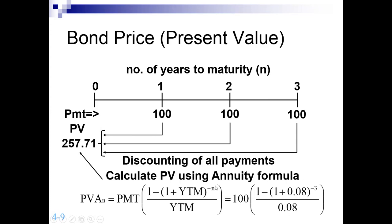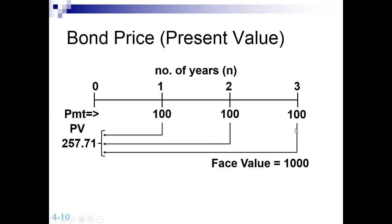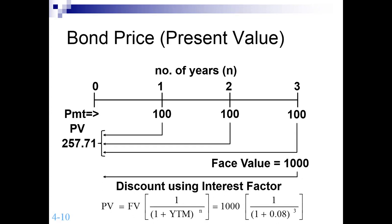Go back to time value of money, practice from there, and then apply it here. Within these three years you receive three coupon payments of 100, and at the end of year three you also receive the face value from the company. This face value received at the end of the third year must also be discounted back to present value. Adding the present value of the coupons and the present value of the face value, the total price comes to 1,051. This is very interesting — the price is more than the face value, which I will explain shortly. To find bond price, simply apply the discount factor to all cash flows received, including the face value.